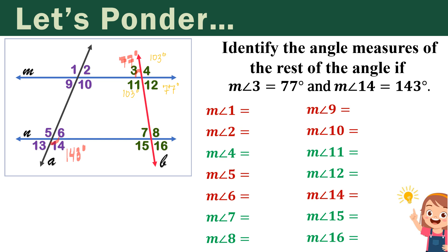Alternate interior angles are congruent. The alternate interior angles we have would be angle 7 and angle 12, which means angle 7 has the same measure as angle 12, while angle 8 has the same measure as angle 11, which is 103 degrees. And since angle 15 is a vertical angle with angle 8, we can say that it measures 103 degrees as well.